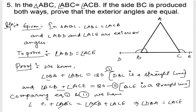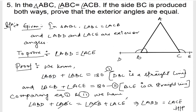Let me write it as ABD equals ACE — hence proved. Since angle ABC is equal to angle ACB, angle ABD is equal to angle ACE. I hope you understood. Next question I'll try to take a bigger pitch. If you have any doubts, confusion, or suggestions, please write in the comments below. Thank you so much, we will meet in the next video.